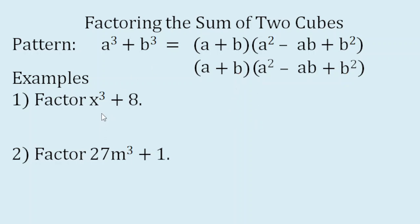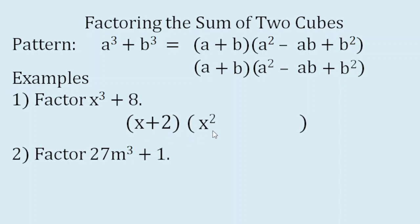We will factor X cube plus 8. We have a binomial factor and a trinomial factor. The cube root of X cube is X, and the cube root of 8 is 2, so our binomial factor is X plus 2. For the trinomial factor: square the first term — X times X is X squared — followed by a minus sign. Multiply the two terms: X times 2 is 2X. Then the last term: square 2 — 2 times 2 gives us 4. So these are the factors: the quantity X plus 2 times the quantity X squared minus 2X plus 4.